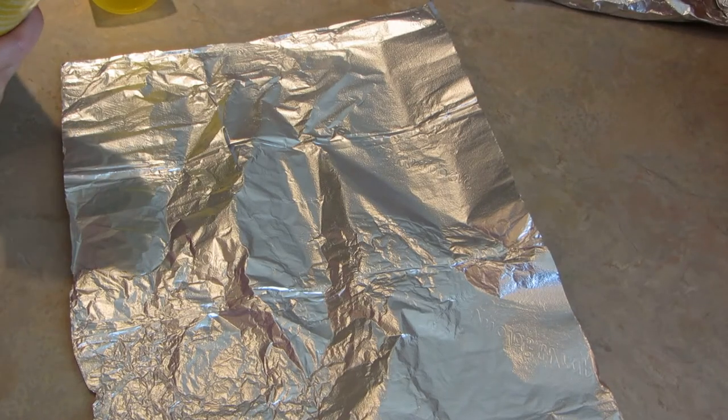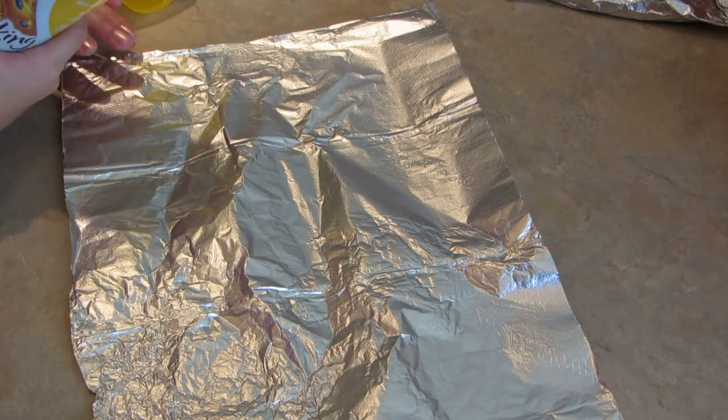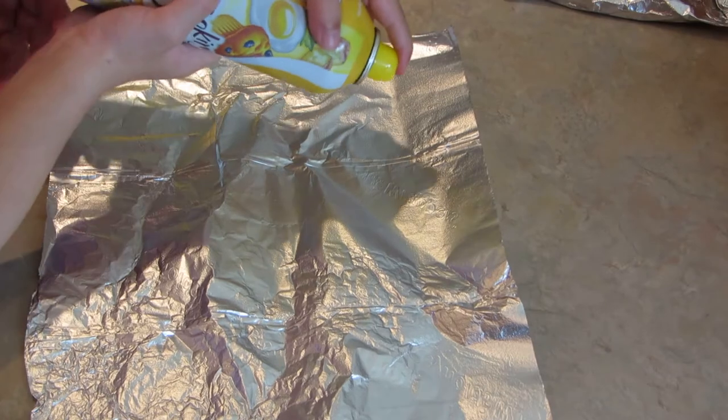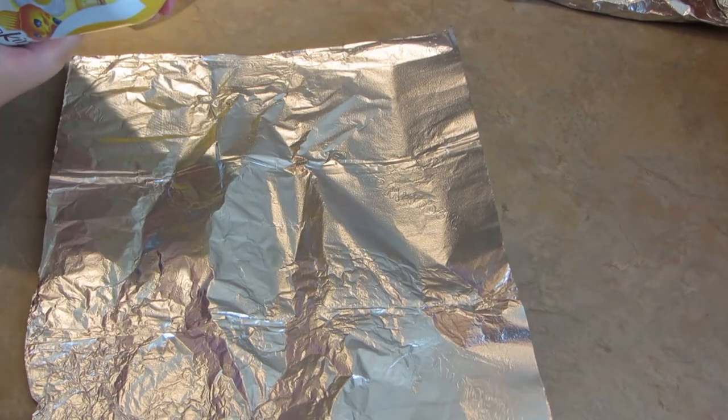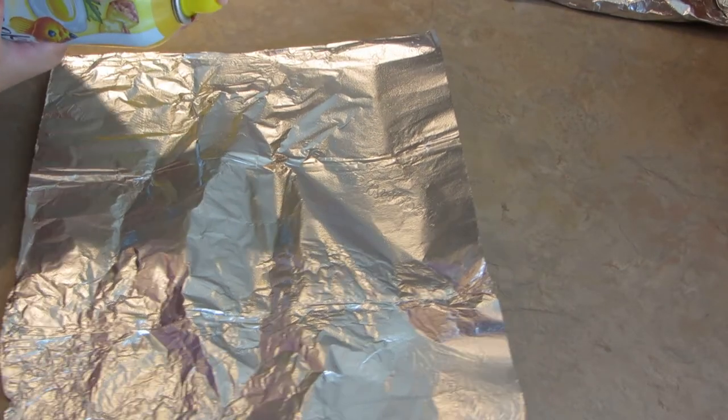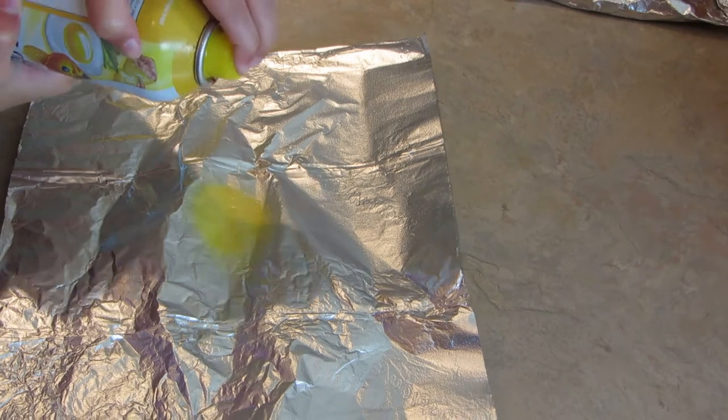Hi, it's AlaskaGranny. I'm in the kitchen with my six-year-old grandson and we're going to show you how we make hors d'oeuvres on the fire. First, you spray a little bit of spray on your foil.